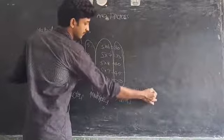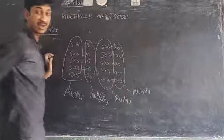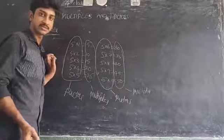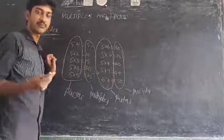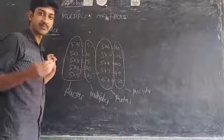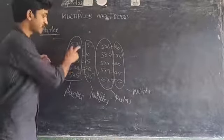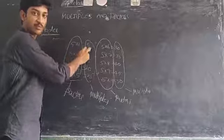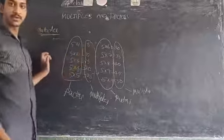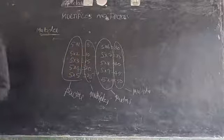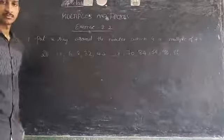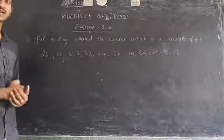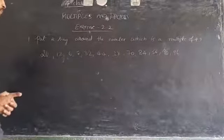A multiple is formed by the product of two factors, and by using the factors we can form a multiple. Now, children, Exercise 2.2, the first problem: put a ring around the number which is a multiple of 4.